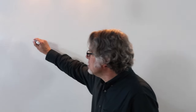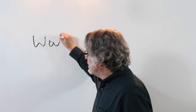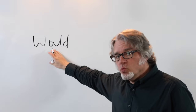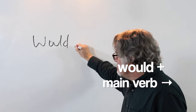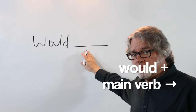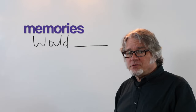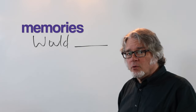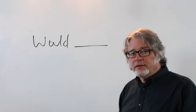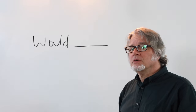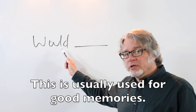You can use WOULD, the modal verb WOULD, with the main verb in the simple form, to talk about memories or things that you did repeatedly in the past. This is usually used for good memories.